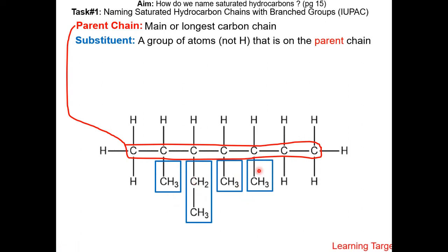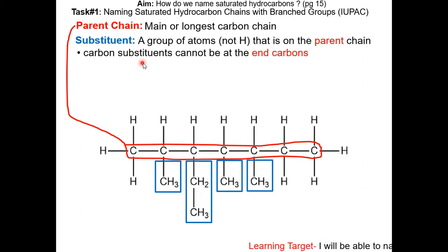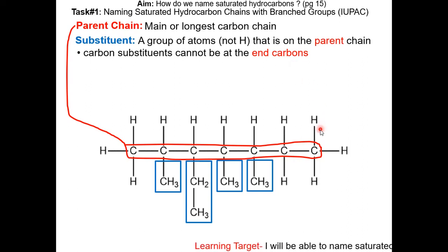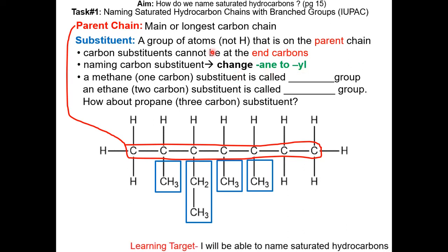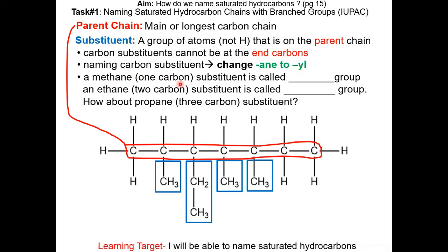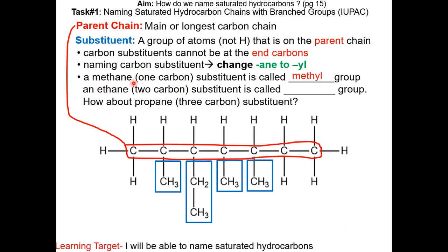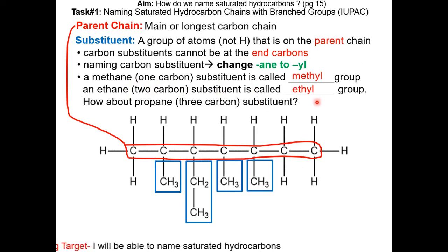There are 4 substituents in this molecule. Carbon substituents cannot be at the end carbons, because if they were, they would be part of the parent chain. To name a carbon substituent, you have to change the ending from -ane to -yl. For example, methane, which is a 1-carbon substituent, is called a methyl group. And ethane, which is a 2-carbon substituent, is called an ethyl group.